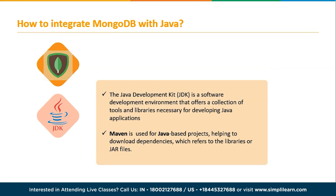Next, we are using JDK. JDK is the compiler or source where you write the code — a software development environment that offers a collection of tools and libraries necessary for developing Java applications. If you're integrating MongoDB with Java, you need certain dependencies or libraries. For that we are using Maven, which is used for Java-based projects and helps in downloading all the necessary dependencies.